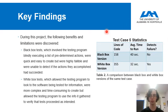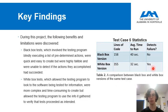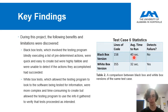Looking at the statistics, we can see that a white box version of this specific test case has more lines of code than the black box version, but it is successfully able to detect if a test has succeeded or if it has failed. White box versions also tend to be a little bit faster than the black box versions because they can look to the software being tested to see exactly when a specific action has successfully been performed and then immediately move on to the next.